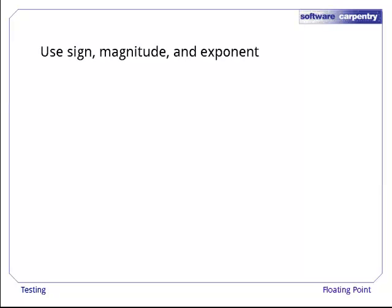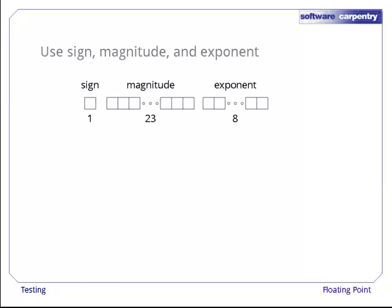Floating-point numbers are usually represented using sign, magnitude, and an exponent. In a 32-bit word, the IEEE 754 standard calls for 1 bit of sign, 23 bits for the magnitude, or mantissa, and 8 bits for the exponent.